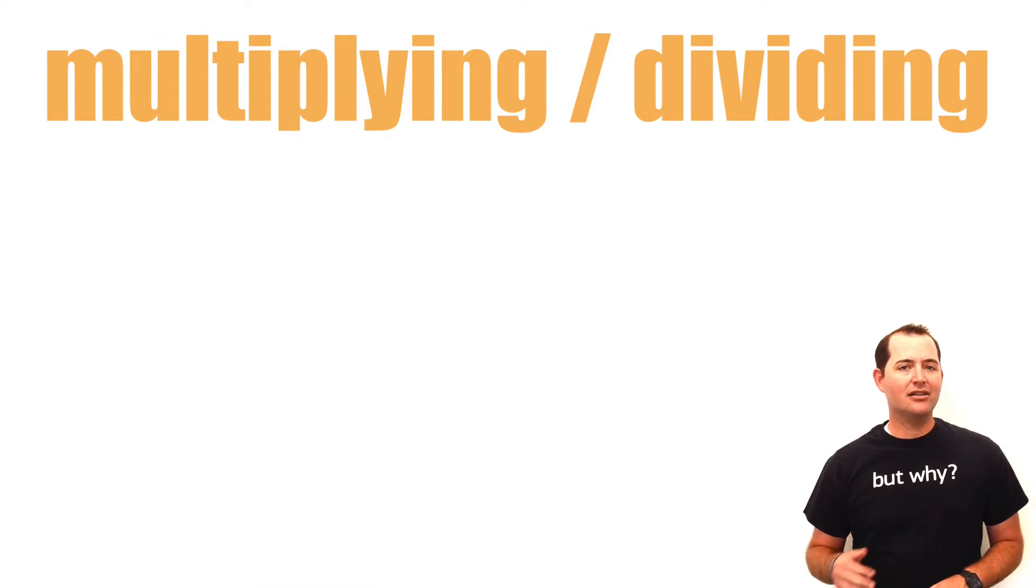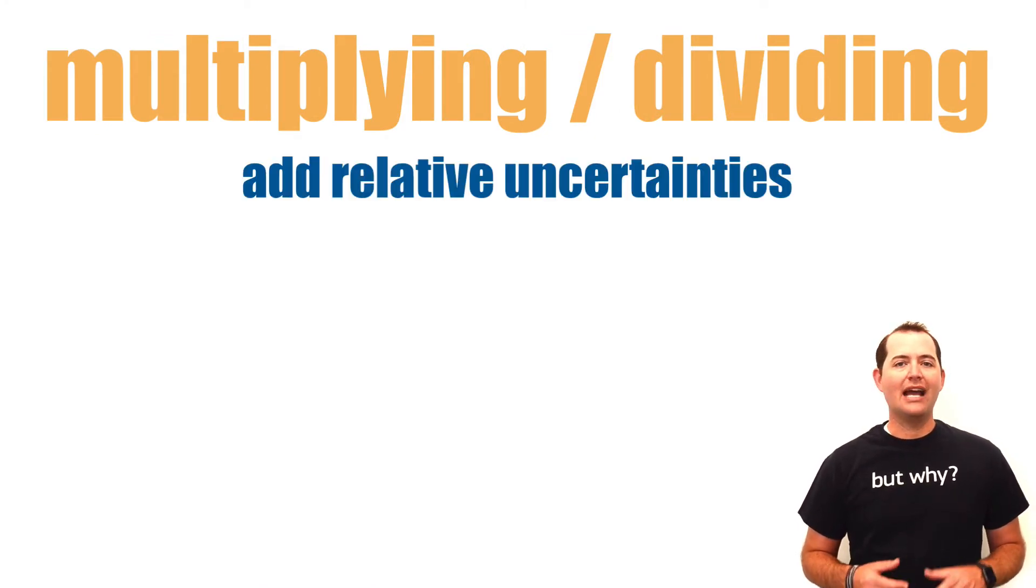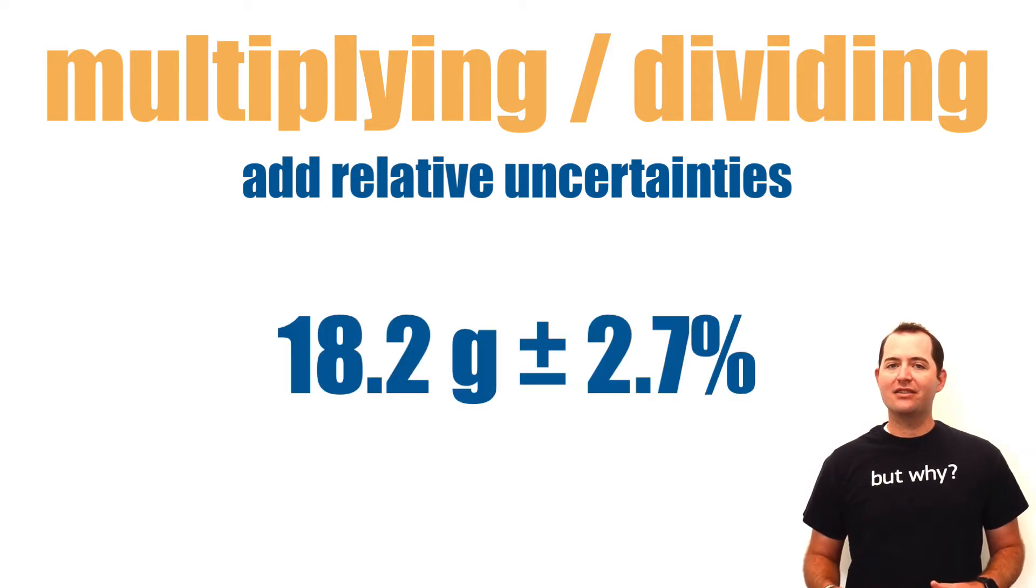When multiplying or dividing values with uncertainties, we add our relative uncertainties. Remember that relative uncertainties are presented with a percentage.